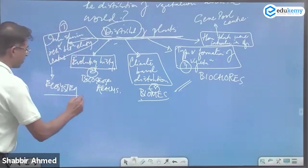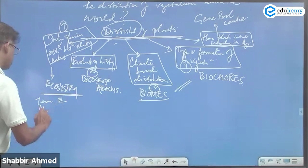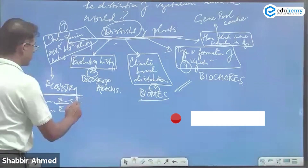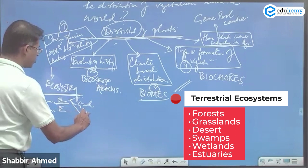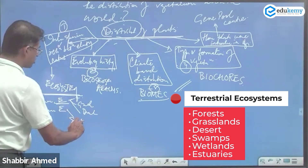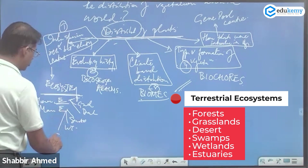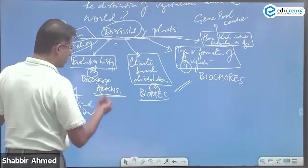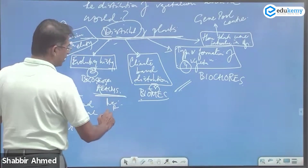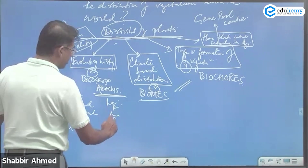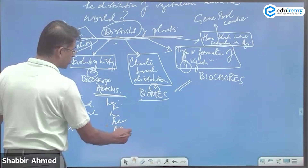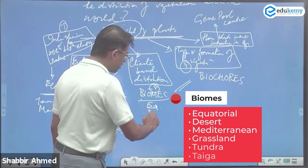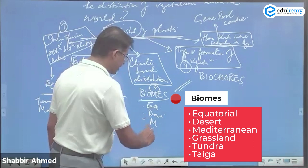How many types of ecosystems do we have? We can have terrestrial ecosystems and marine ecosystems. Under terrestrial, we have forest ecosystems, grassland ecosystems, desert ecosystems, swamp ecosystems, wetland ecosystems, and estuaries ecosystems. For biogeographical REMS, you know terms like neotropical, paleotropical, nearctic, palearctic, notogean, and Australian.